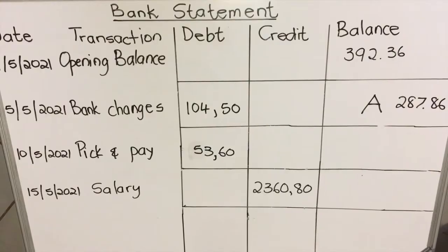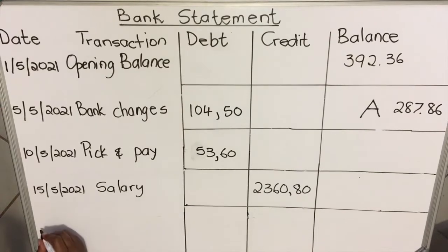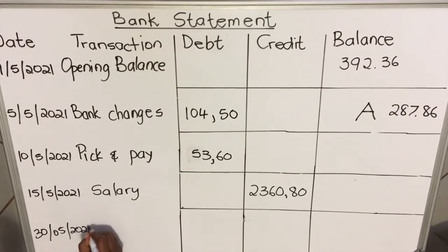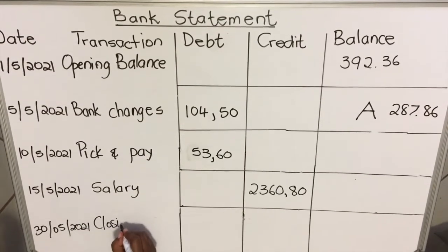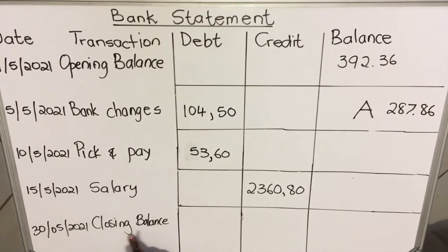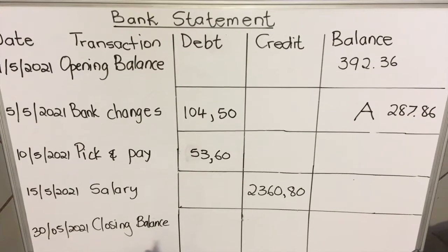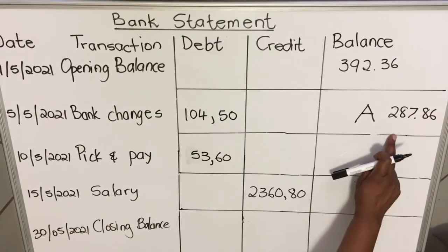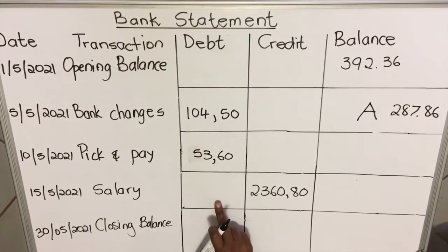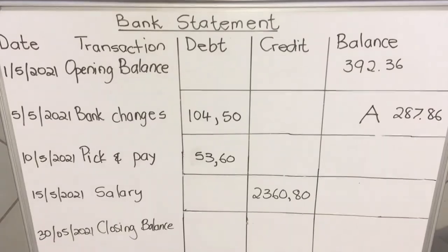Now let's look at the closing balance. Let's say on 30/05/2021 that closing balance is the money in the account at that particular date. So you subtract the Pick and Pay amount because it was debited, and then add the salary that went in.